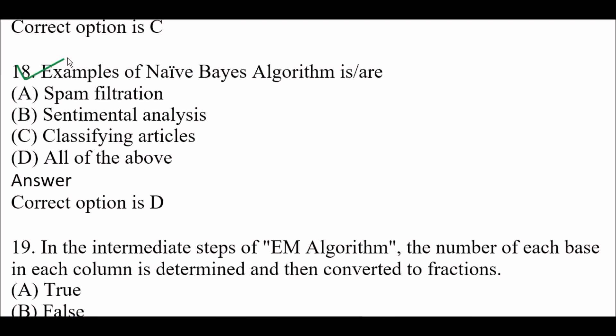Next question: Examples of Naive Bayes algorithm are — Option A: Spam filtration, Option B: Sentimental analysis, Option C: Classifying articles, Option D: All of the above. Right answer is Option D — all of the above.